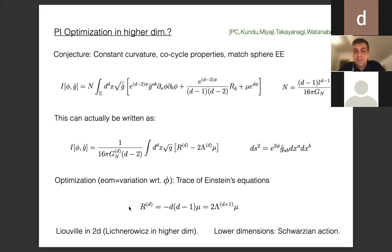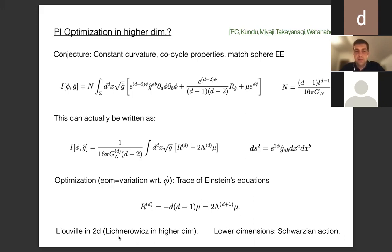The nice property is that when we vary this action with respect to the Weyl factor phi in the optimization procedure, we are computing the trace of Einstein's equations. The trace of Einstein's equations in d dimensions with negative cosmological constant gives a constant, which equals minus 2 times the d-dimensional cosmological constant — a nice numerical relation. This generalizes the Liouville equation to d dimensions, related to the Lichnerowicz equation in higher dimensions. One can also derive an effective Schwarzian action in 1D from this optimization.